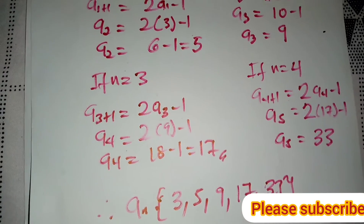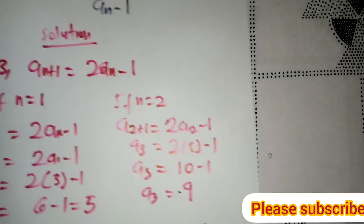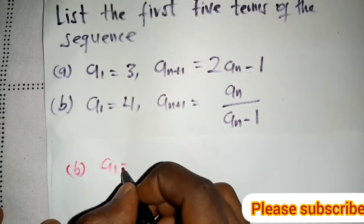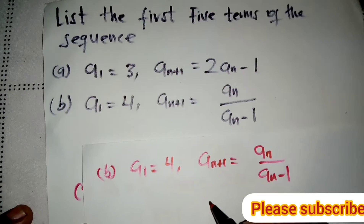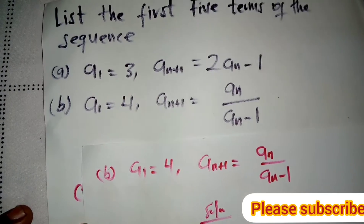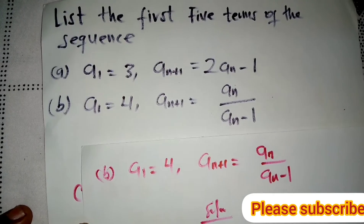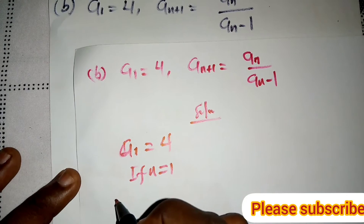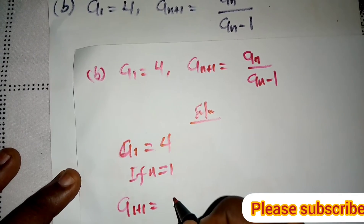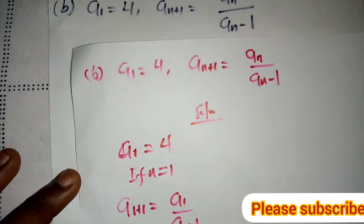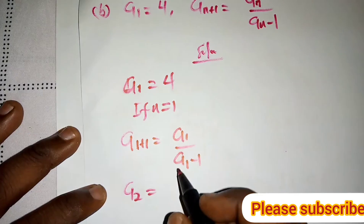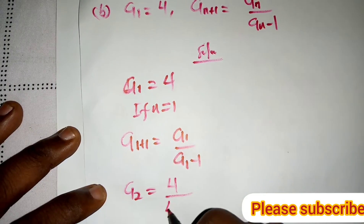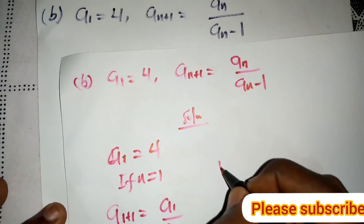This is how to find the first five terms. Now let's move to the second part. In part b, a1 = 4 and the recursive formula is a(n+1) = a(n) / (a(n) - 1). If n = 1, then a2 = a1 / (a1 - 1) = 4 / (4 - 1) = 4/3.